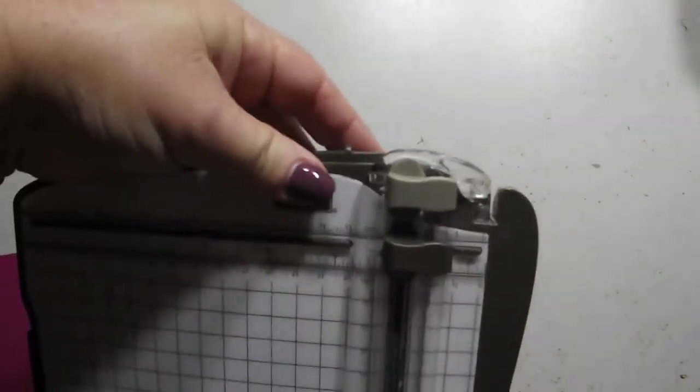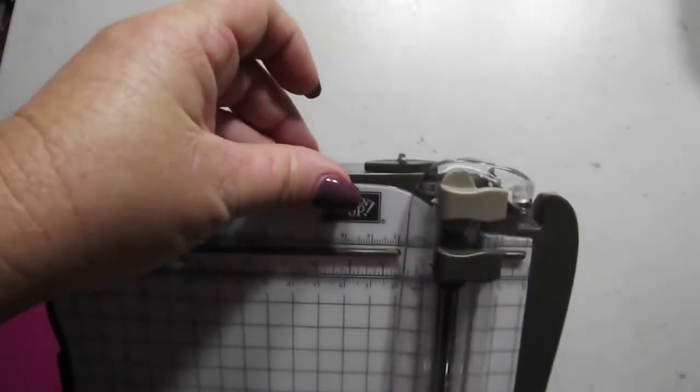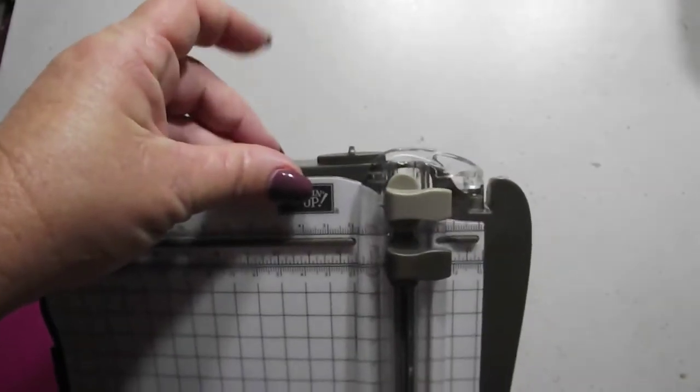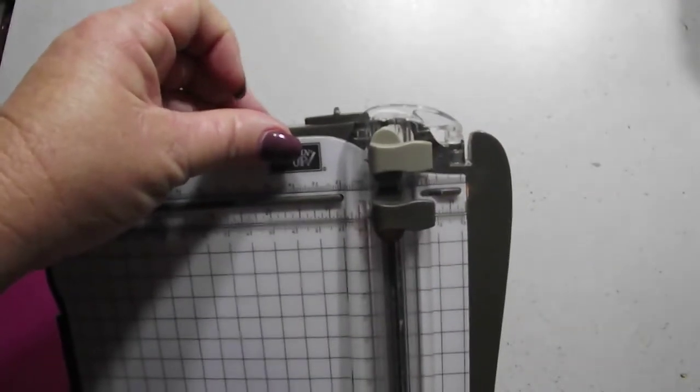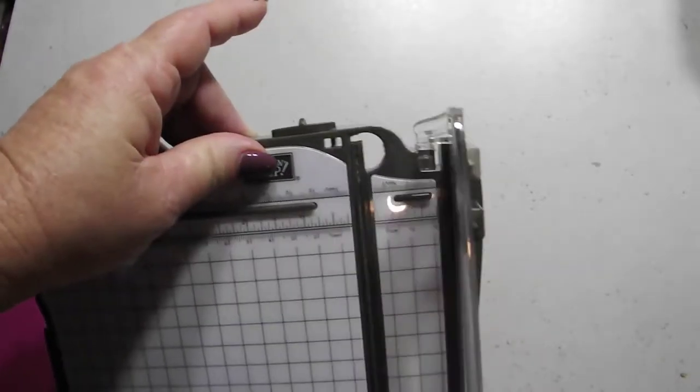We have a handy locking mechanism up here. It locks this from moving and coming undone, so when you actually are transporting your trimmer, you can lock it into position, so it unlocks and then opens it up.